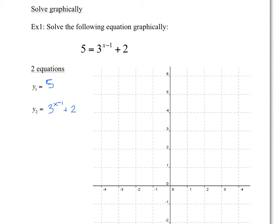y equals 5, well, that one's easy. That's just a horizontal line at y equals 5. So there's our horizontal line. So I'm going to call this y1.